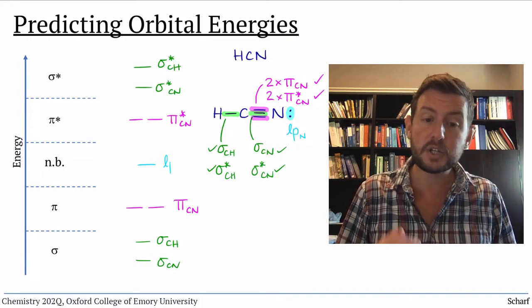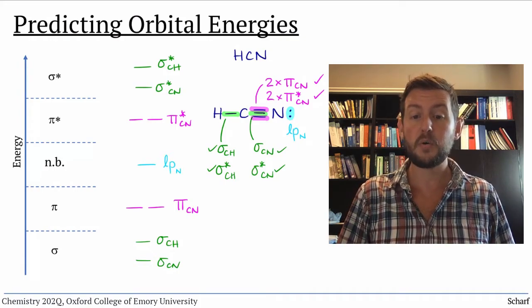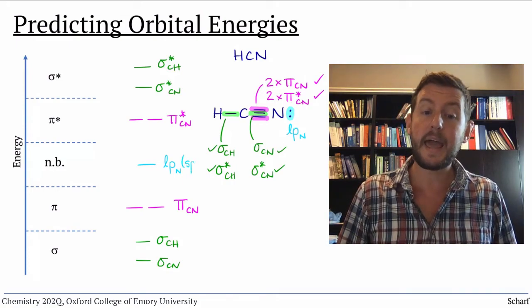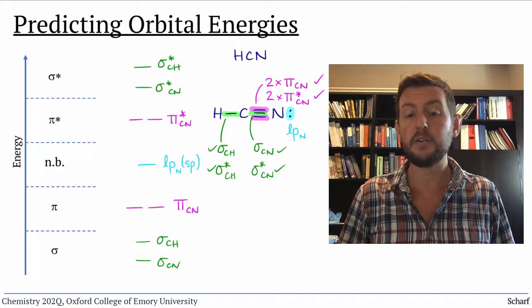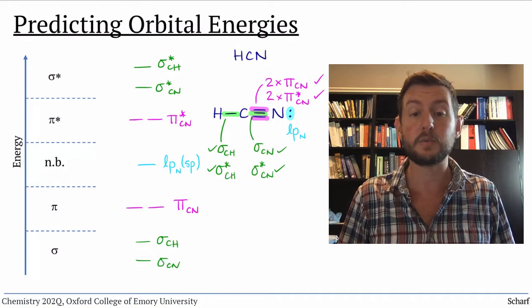Finally, we have that nitrogen lone pair. It's in a non-bonding orbital, so in the middle of the MO diagram. It happens to be in an SP hybrid orbital, because nitrogen's other valence orbitals are used to make the CN sigma and pi bonds we've already used.